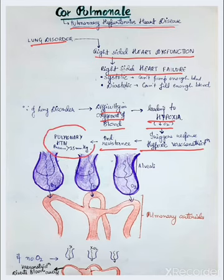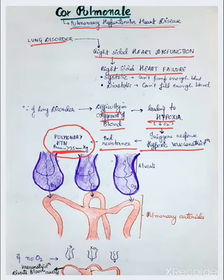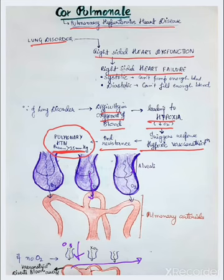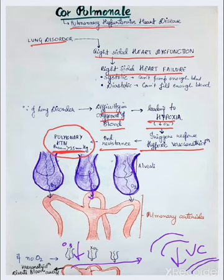This leads to pulmonary hypertension, where pressure is more than 25 mmHg. Here we can see the alveoli and pulmonary arterioles — oxygen from the alveoli goes to the pulmonary arterioles. Because of the lung disorder, hypoxic vasoconstriction occurs. Before vasoconstriction the vessel was open, and after vasoconstriction it becomes narrowed, diverting blood away.